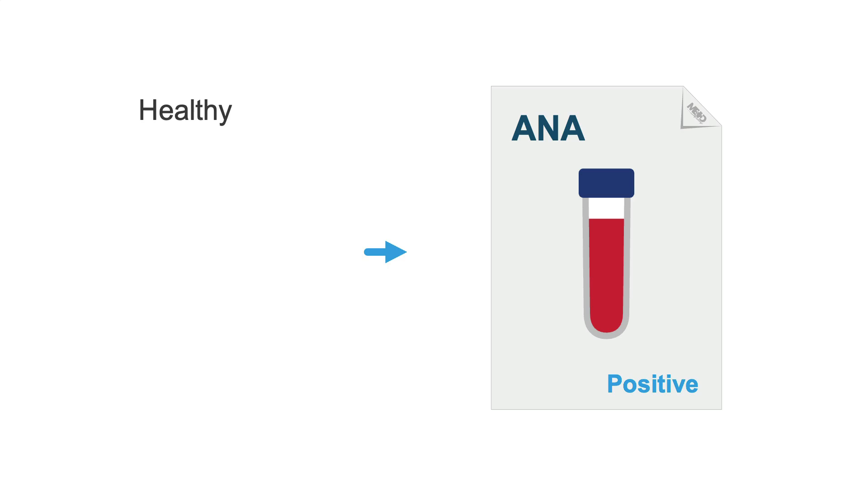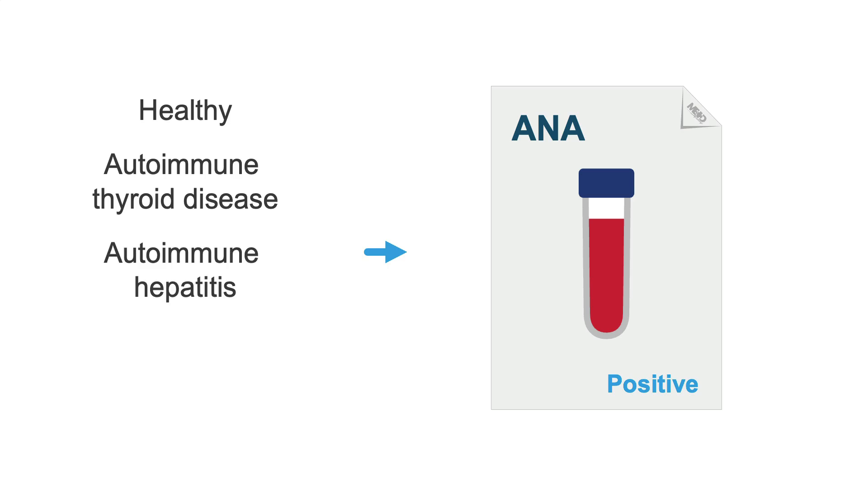If you want to rule out any ANA-related connective tissue disease, always start by checking an ANA, preferentially by immunofluorescence assay, or IFA, because this is the best technique currently available. However, this test still has its limitations, because it can be positive even transiently in healthy individuals or those with other conditions such as autoimmune thyroid disease, autoimmune hepatitis, infections, and cancer.